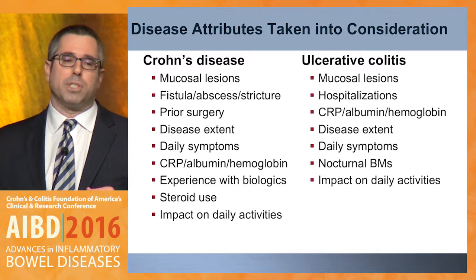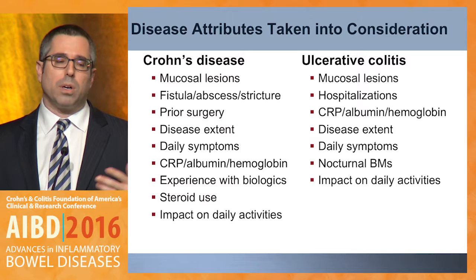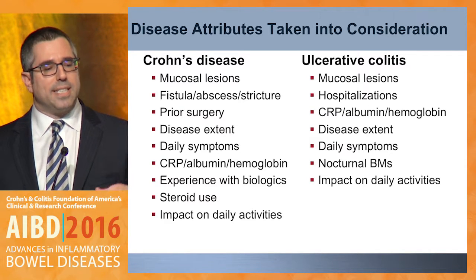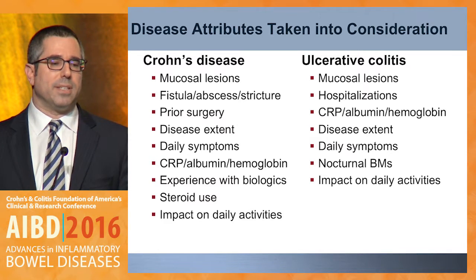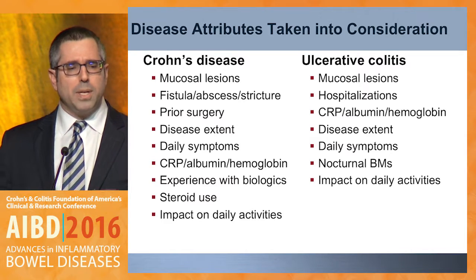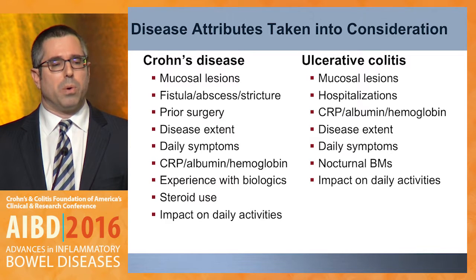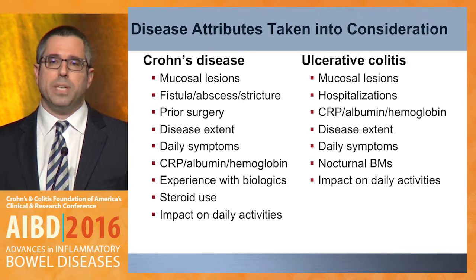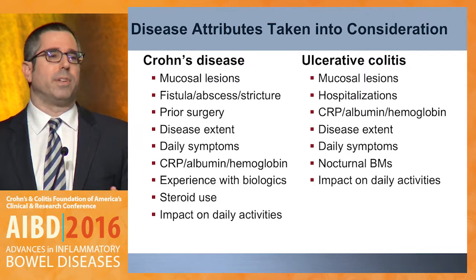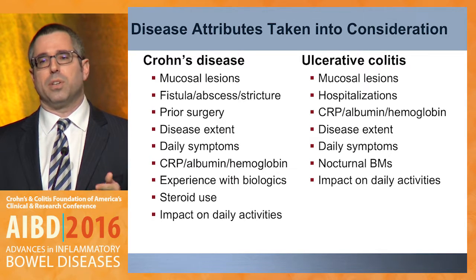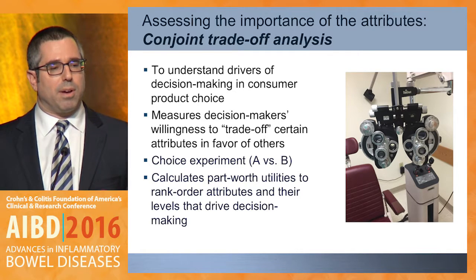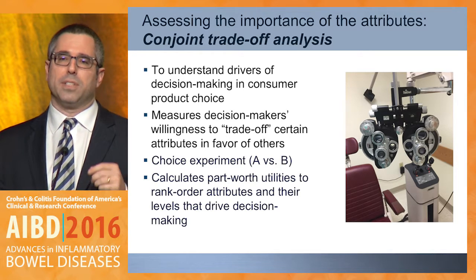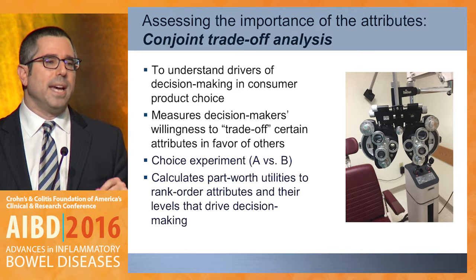In thinking through this project we had to come up with attributes that need to be considered for what causes more or less severe disease. Here's the list for Crohn's disease — none of them are a surprise: mucosal lesions, fistulas, prior surgeries, things related to damage, daily symptoms, experience with biologics, steroids, and impact on daily activities. We did the same for ulcerative colitis with a similar list, although it doesn't take into account all the obvious damage that occurs with Crohn's disease. The trouble is that just checking off these things doesn't help you or your patient. We need to weight certain things more than others so we can consistently score patients and understand how to follow them over time. The technique we used is something called conjoint trade-off analysis — a tool that's used to understand drivers of decision making and consumer product choices. Historically, this is like looking at one car versus another — it's not just about how it looks overall, it's about individual attributes like the color, the radio, the engine, and the cost.